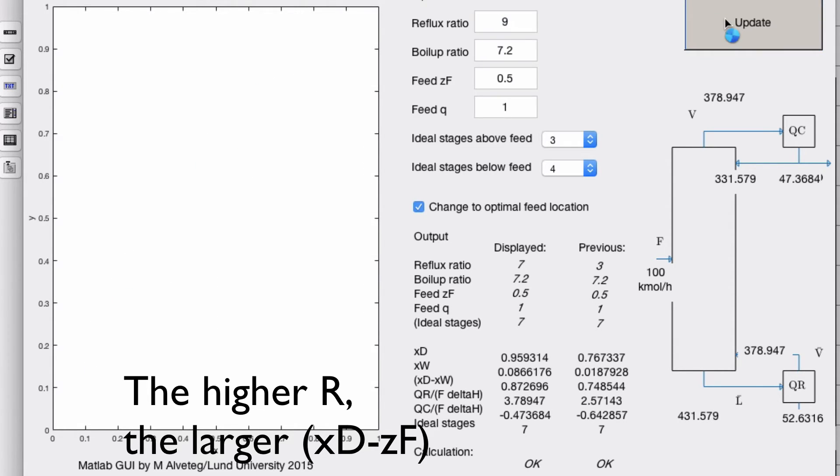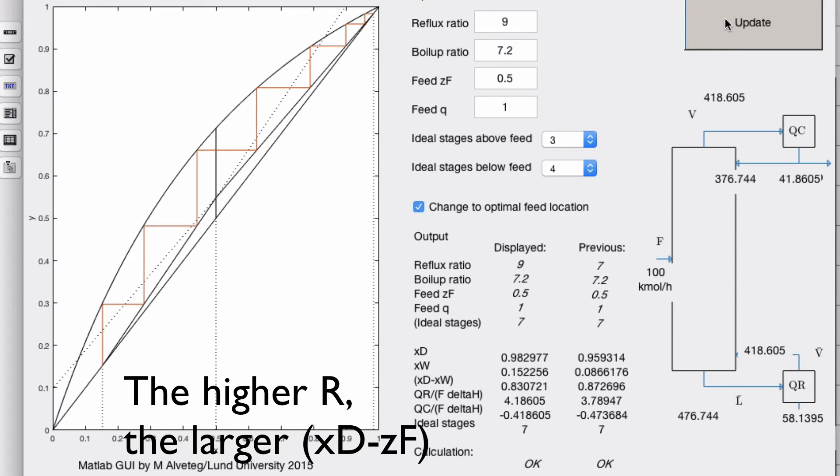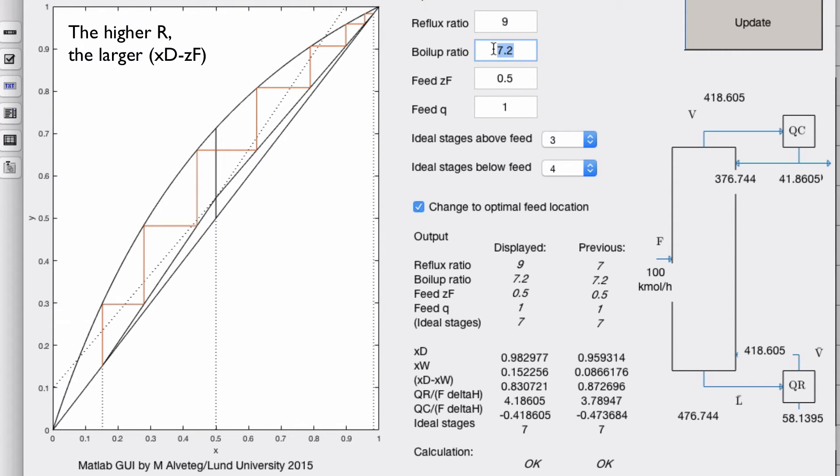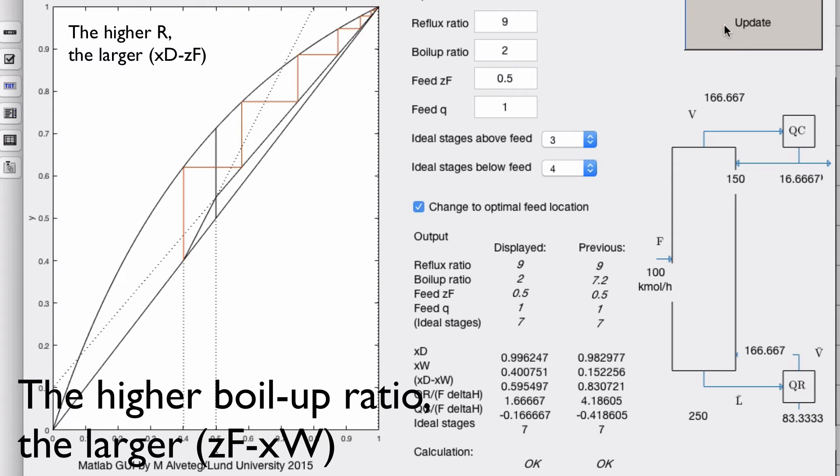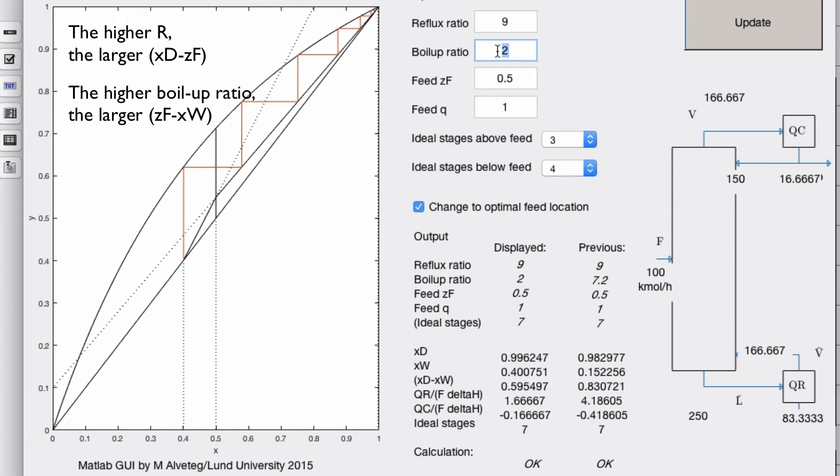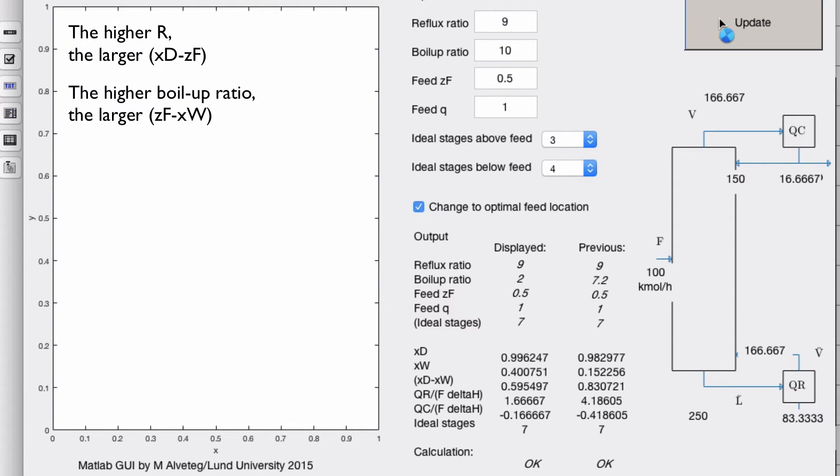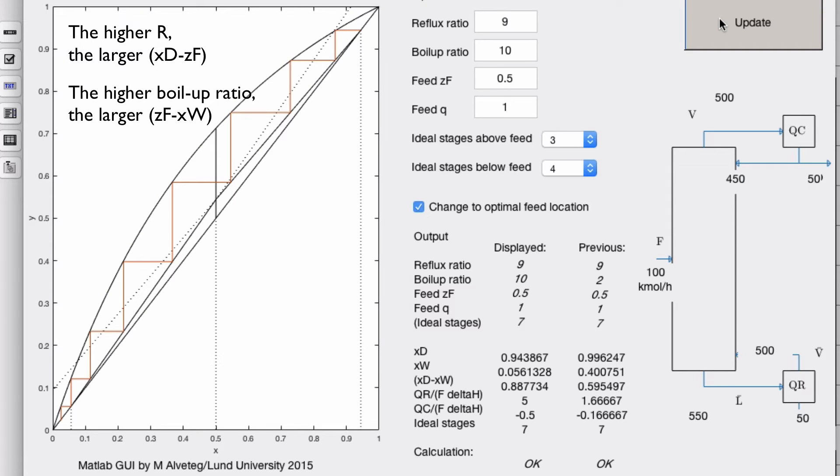And the more we increase the reflux ratio, the further away xd is from xw. And the same thing with the boiler pressure ratio, if we change that, let's lower that to 2. Then xw comes closer to the feed. Let's increase it. Then it comes further away.